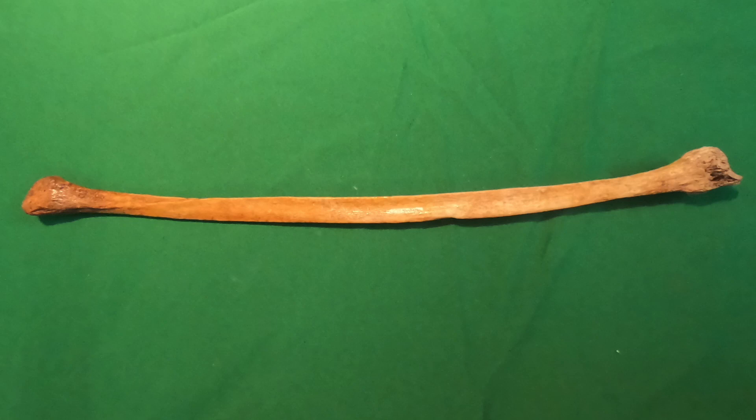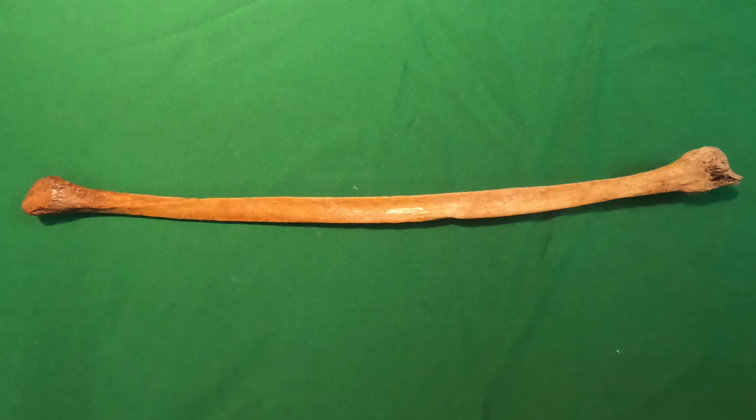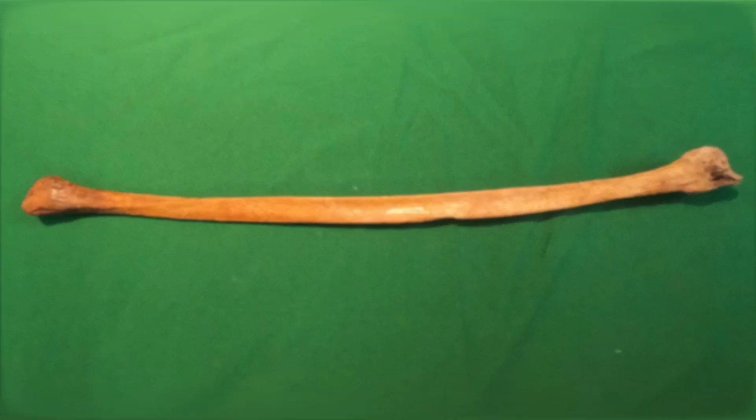Hello everyone, welcome to Anat-AV. Today we will be talking about the anatomy of the fibula. The fibula is the lateral smaller bone of the leg. It does not take part in the formation of the knee joint or in weight bearing. However, it is a part of the ankle joint.